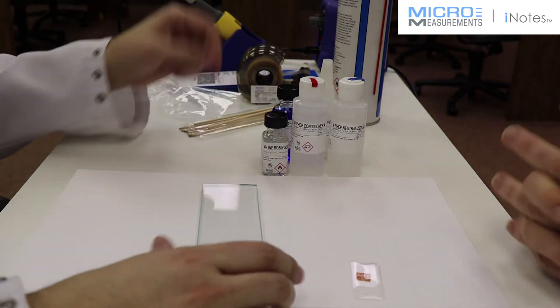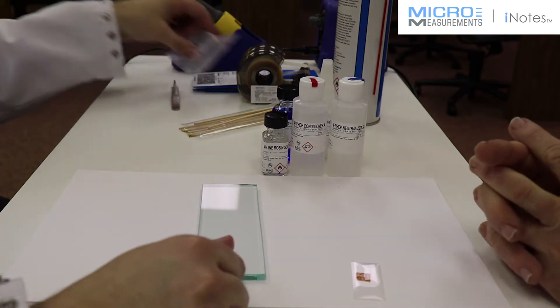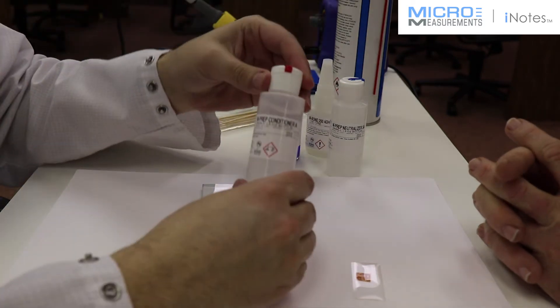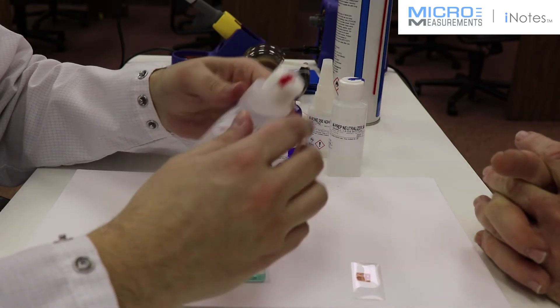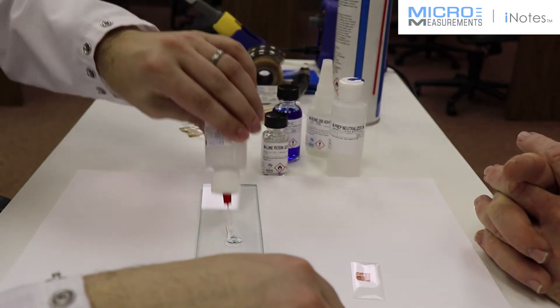The next step is we're going to take the Conditioner A, the mild phosphoric acid solution, and we're going to scrub the surface of the glass. He'll flood the surface of the glass.